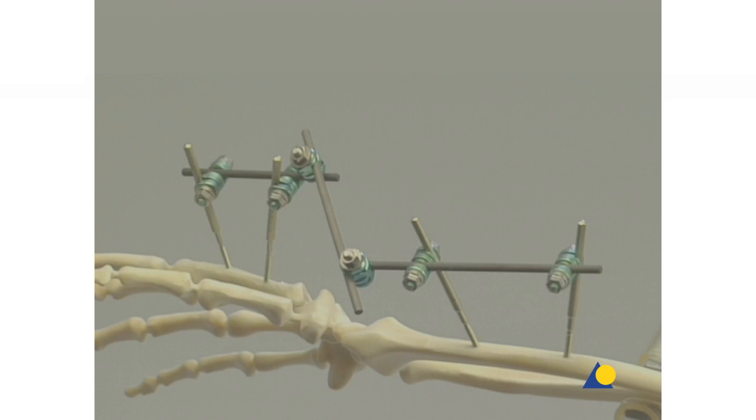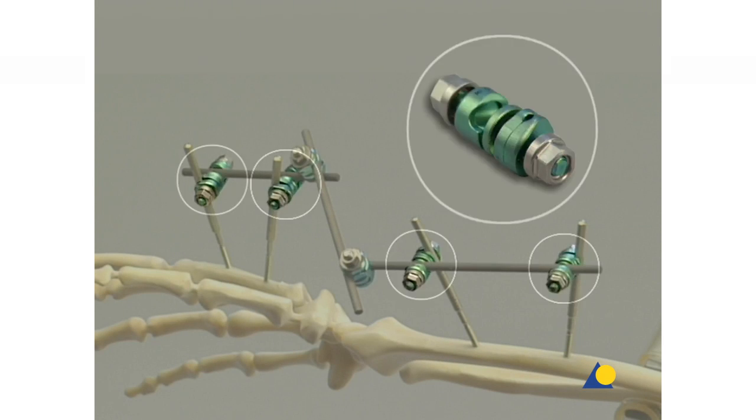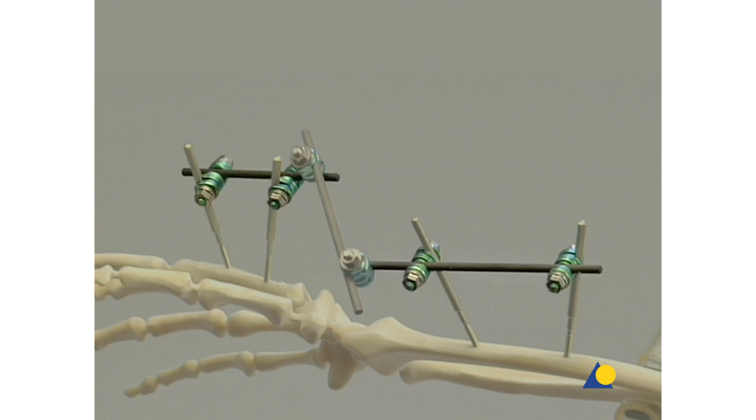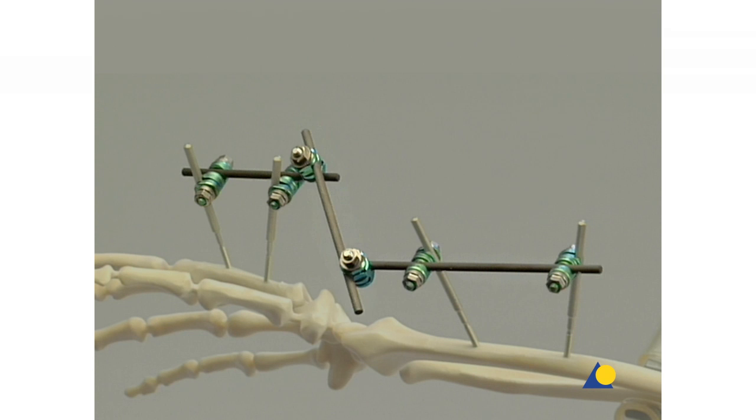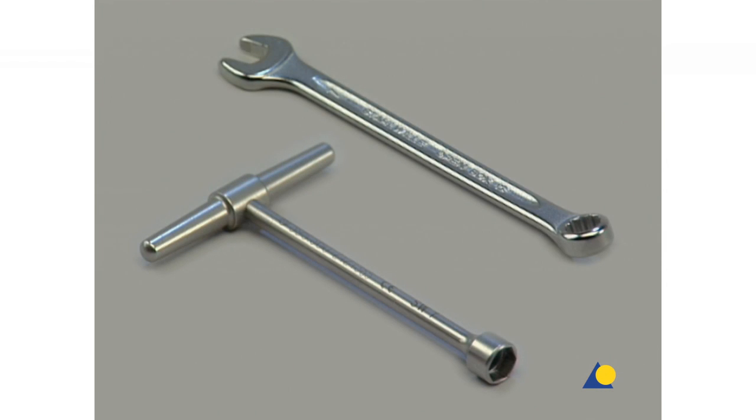The construction of the bridging frame requires four MR-safe self-holding clip-on clamps, two 4-millimeter diameter connecting rods, two MR-safe self-holding clip-on combination clamps, and one additional 4-millimeter diameter connecting rod. To tighten the frame assembly, the 7-millimeter socket wrench and the 7-millimeter combination wrench are needed.